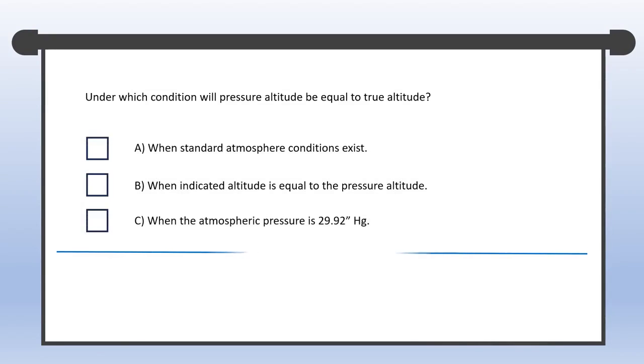Enough fun. Let's work on this one. Under which condition will pressure altitude be equal to true altitude? This occurs only in a perfect world when standard atmosphere conditions exist. The winner here is A. But in case you can't shake off C, think of it this way. For them to be equal, they must start at the same level, which happens when the mean sea level pressure is 29.92 inches of mercury. So, C seems to make sense here.